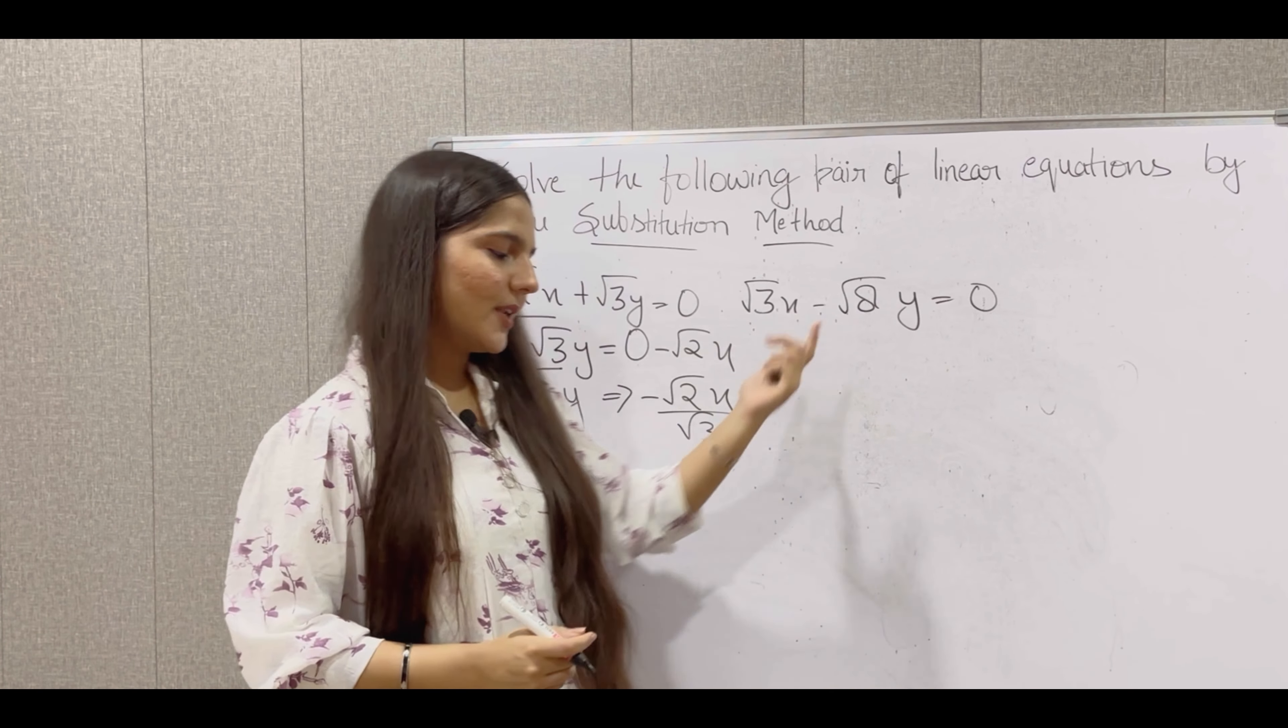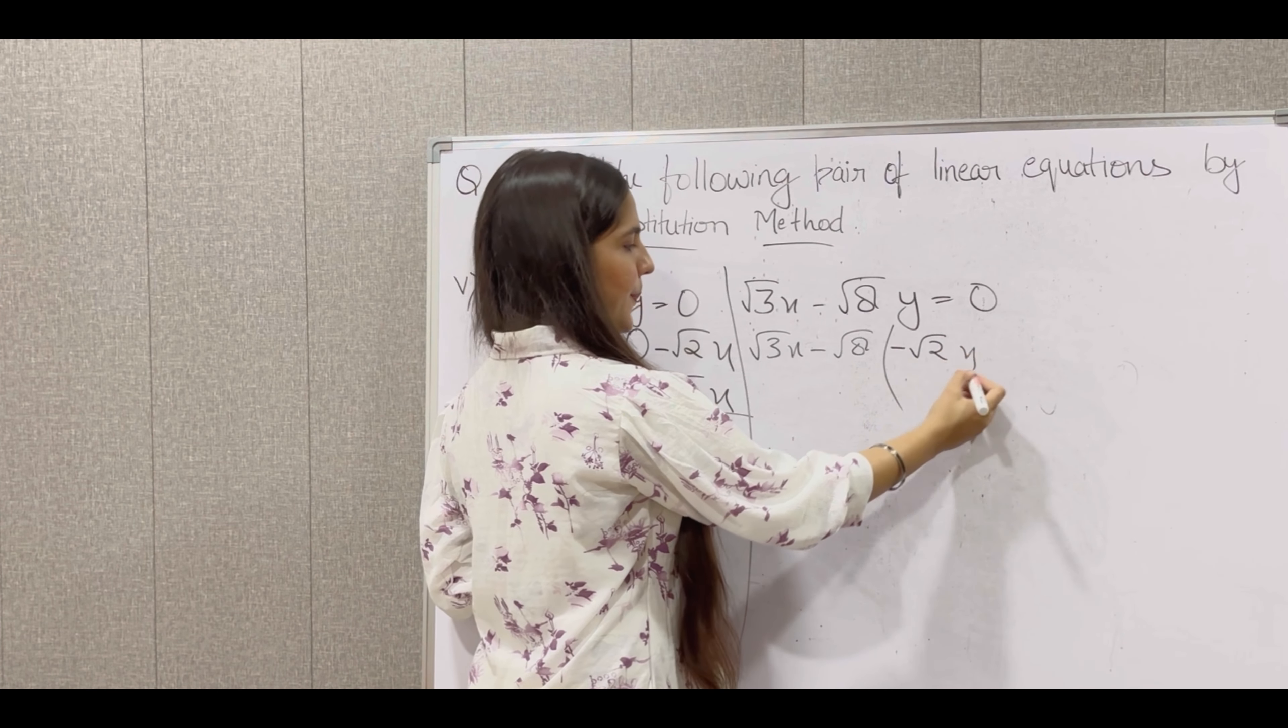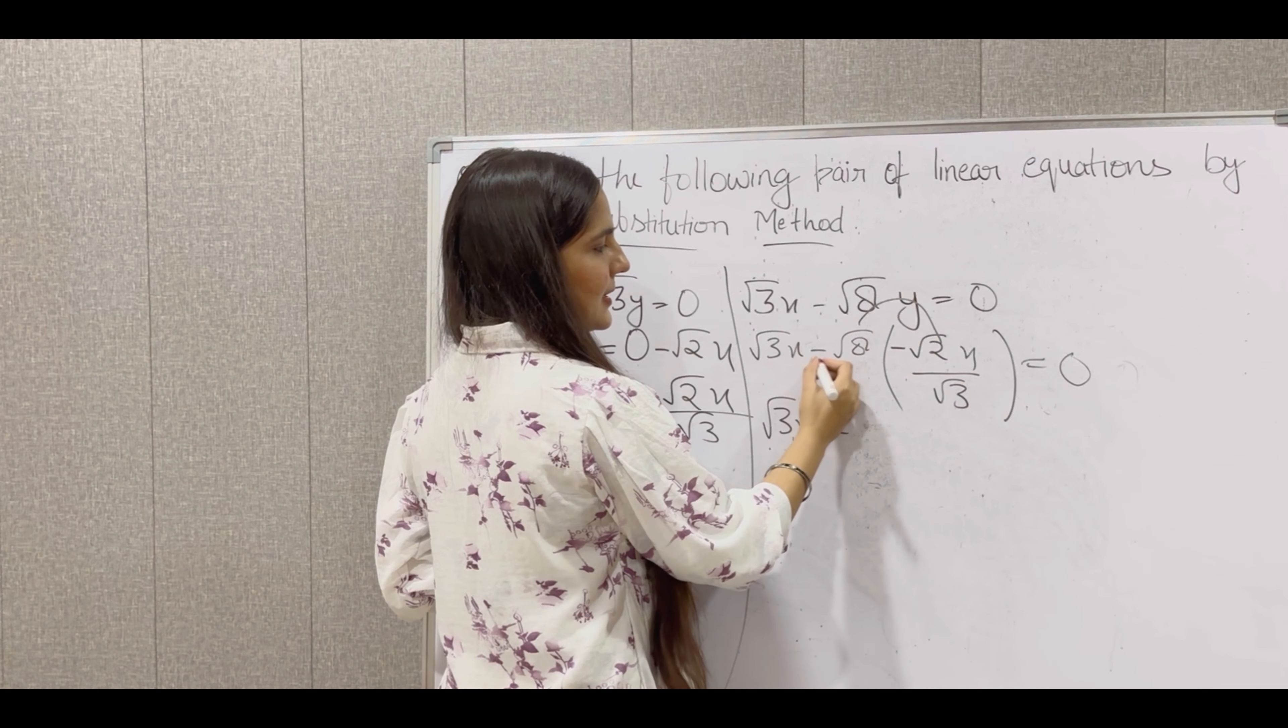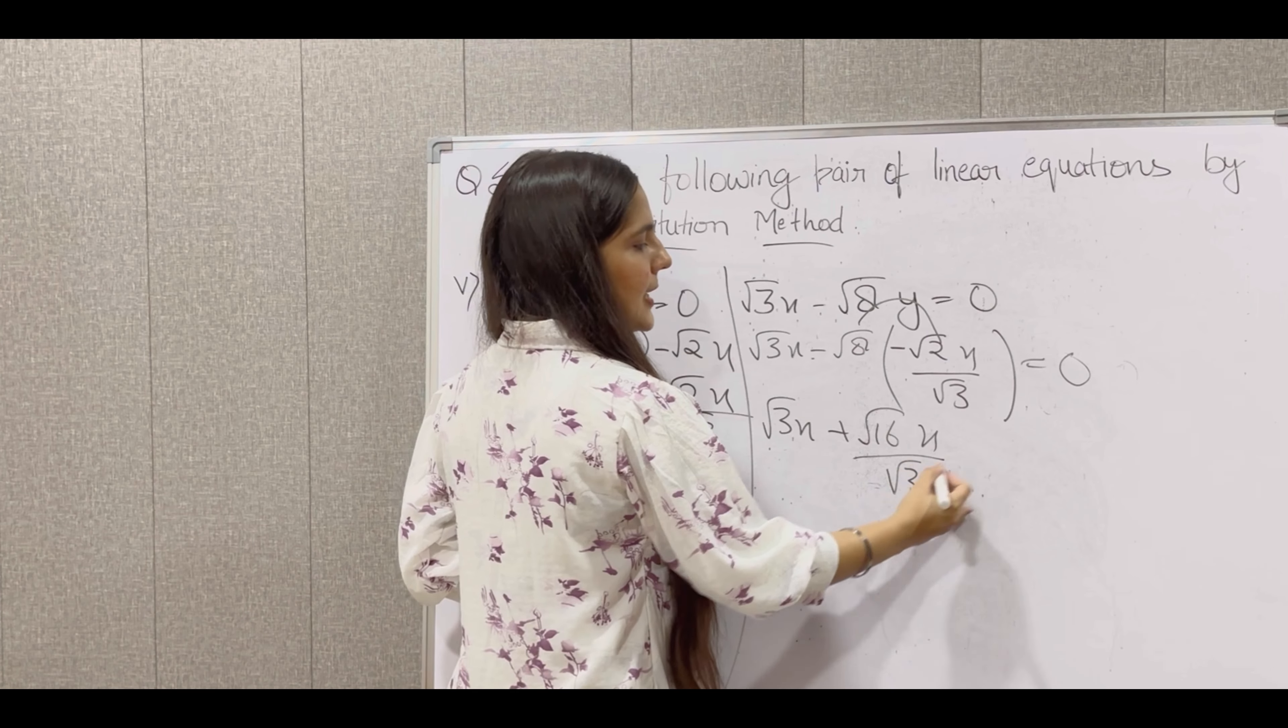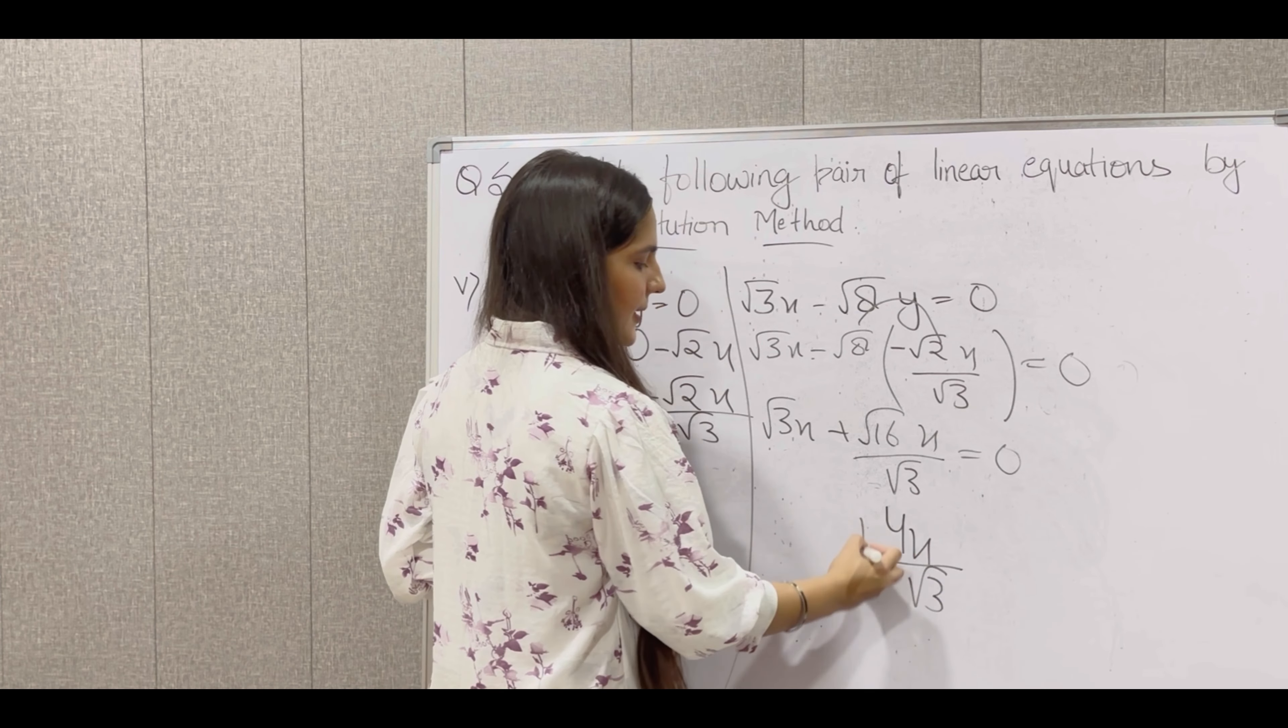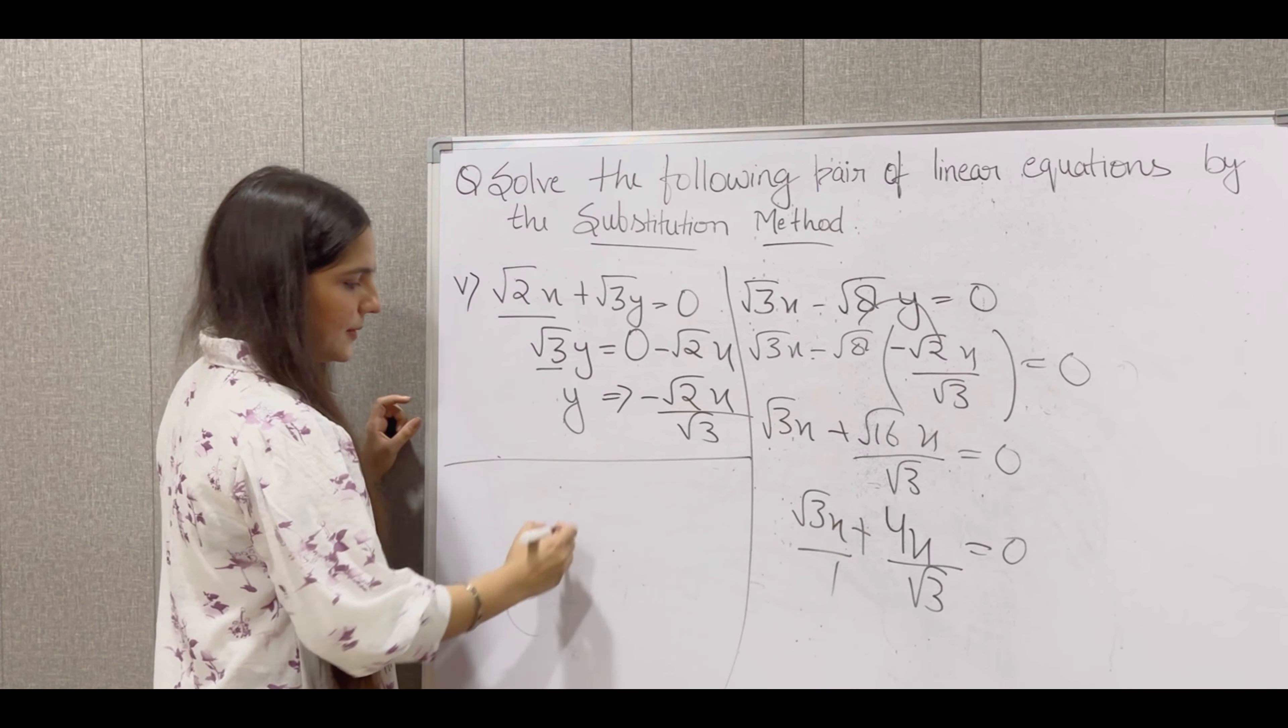Now this value we will put here. So root 3x minus root 8 into, in place of y we will write minus root 2x upon root 3, is equal to 0. So root 3x minus, this will be solved. Root 8 is root 16. Minus minus becomes plus. So root 16x upon root 3 is equal to 0. Root 16 is 4. So 4x upon root 3 plus root 3x is equal to 0. Now take LCM. So LCM is root 3.